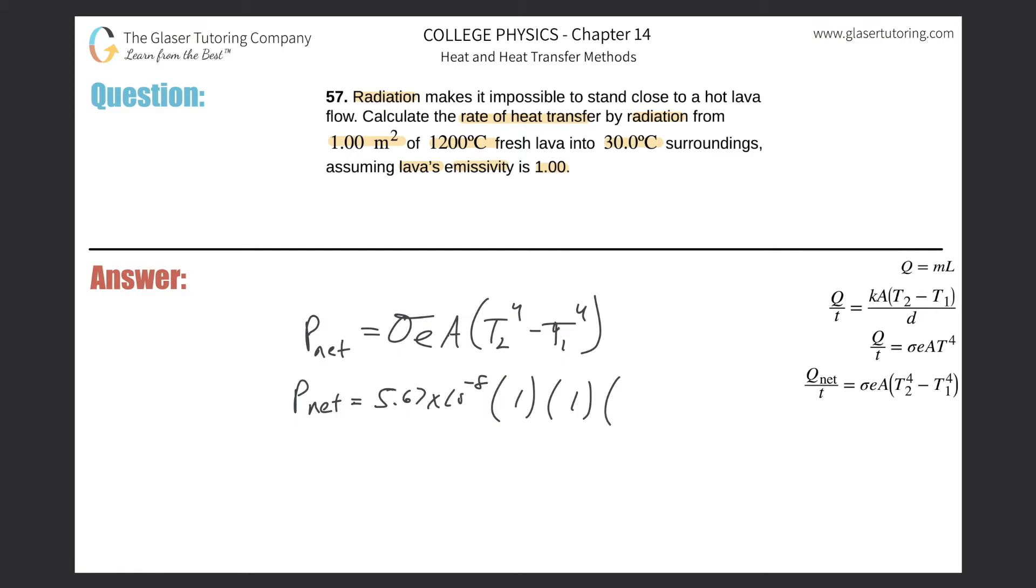The area they told us is 1 m², this is fantastic. Now you can only plug in Kelvin temperatures, so take the 1200°C and add 273 to it—that's 1473, raised to the fourth. Minus then 30°C, so convert that into Kelvin, that's 303, raised to the fourth.